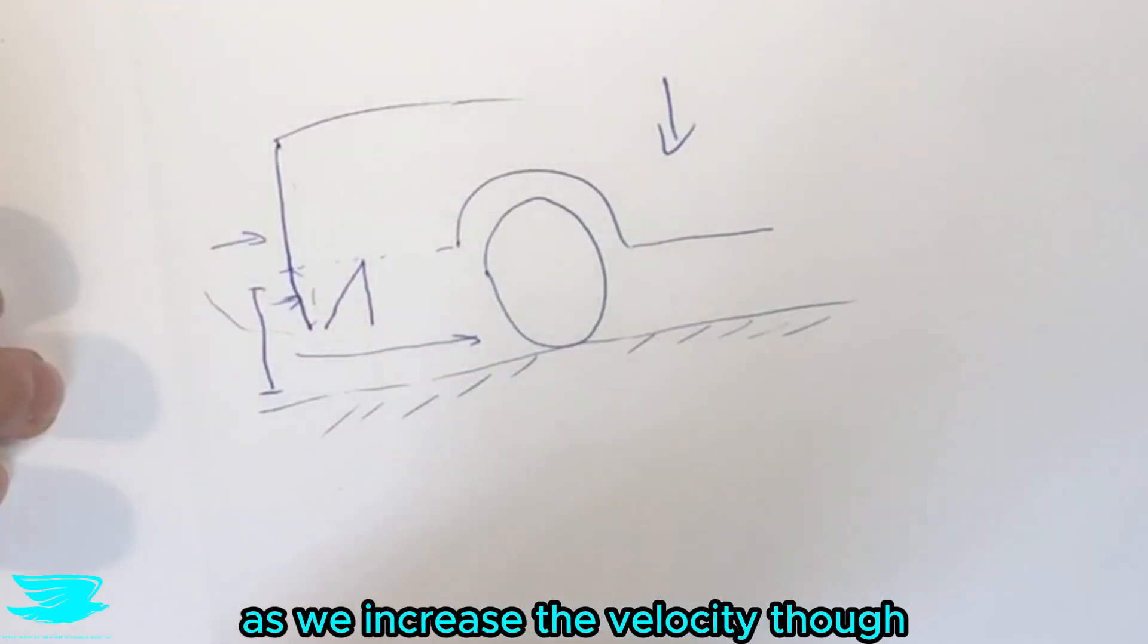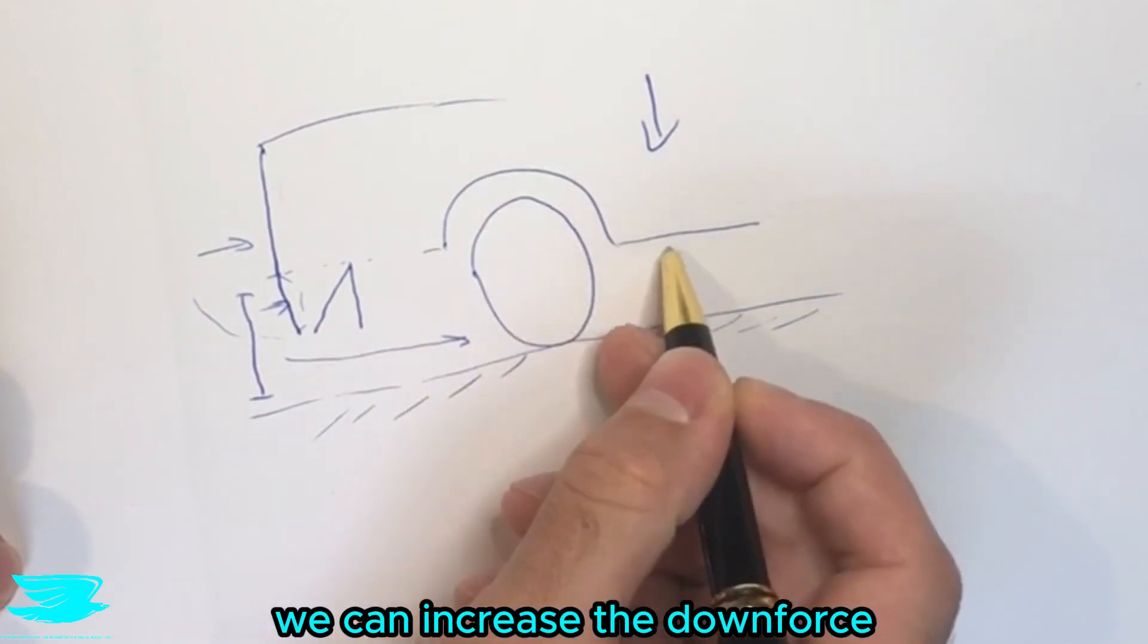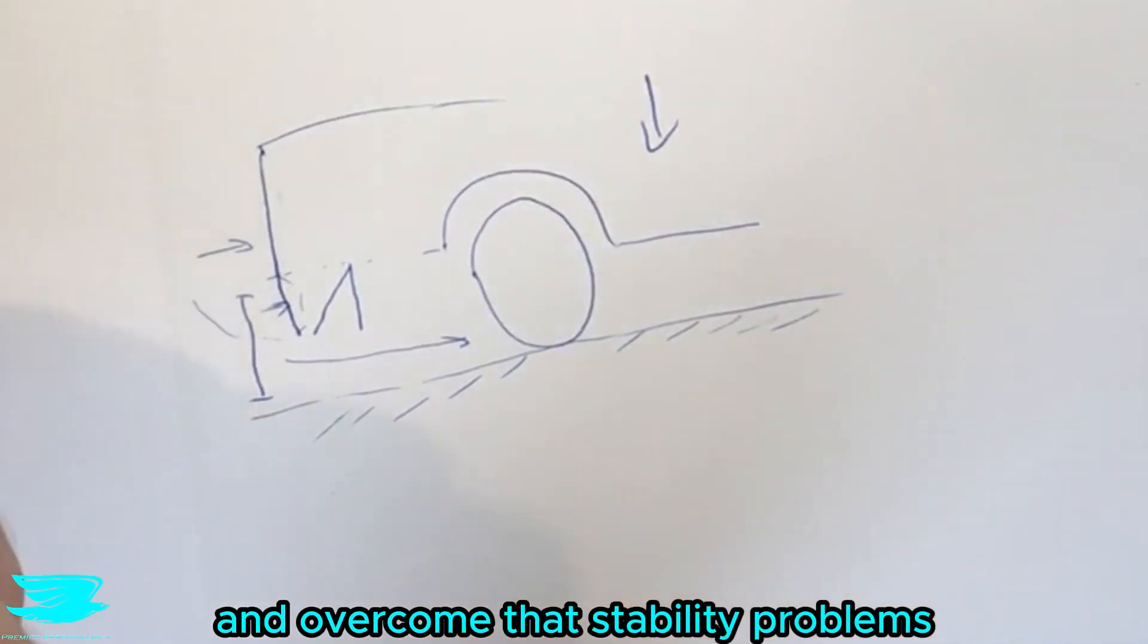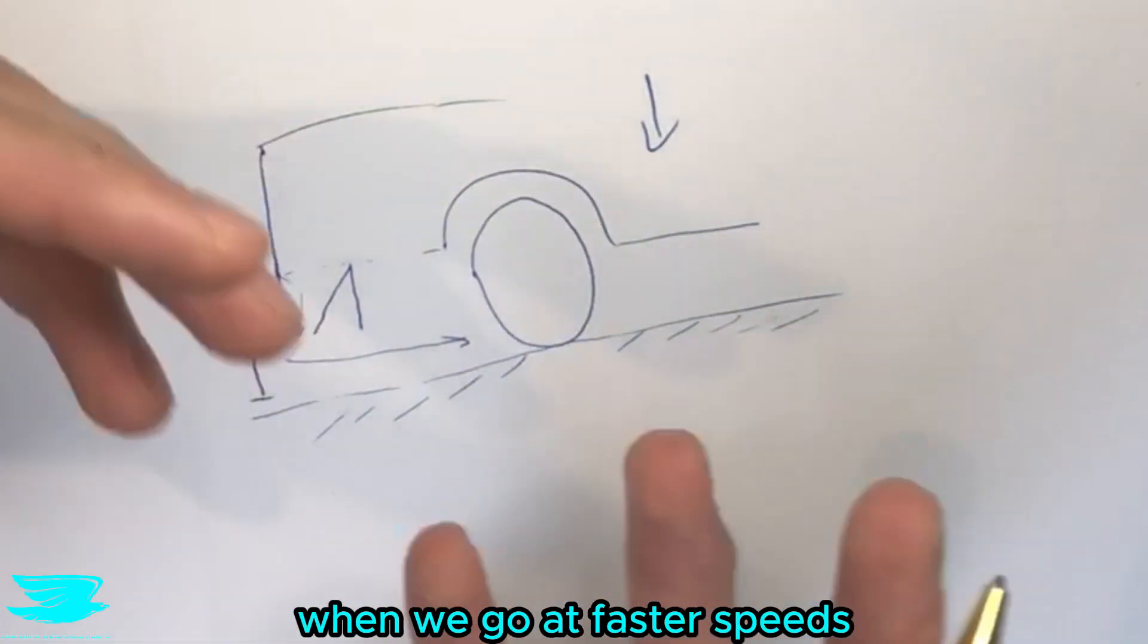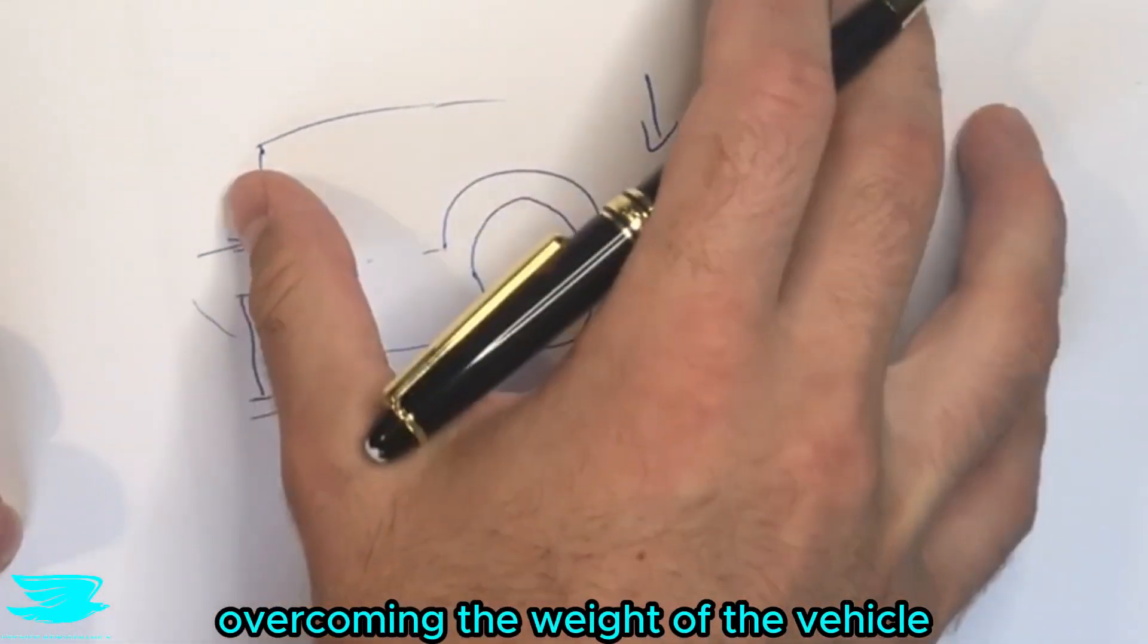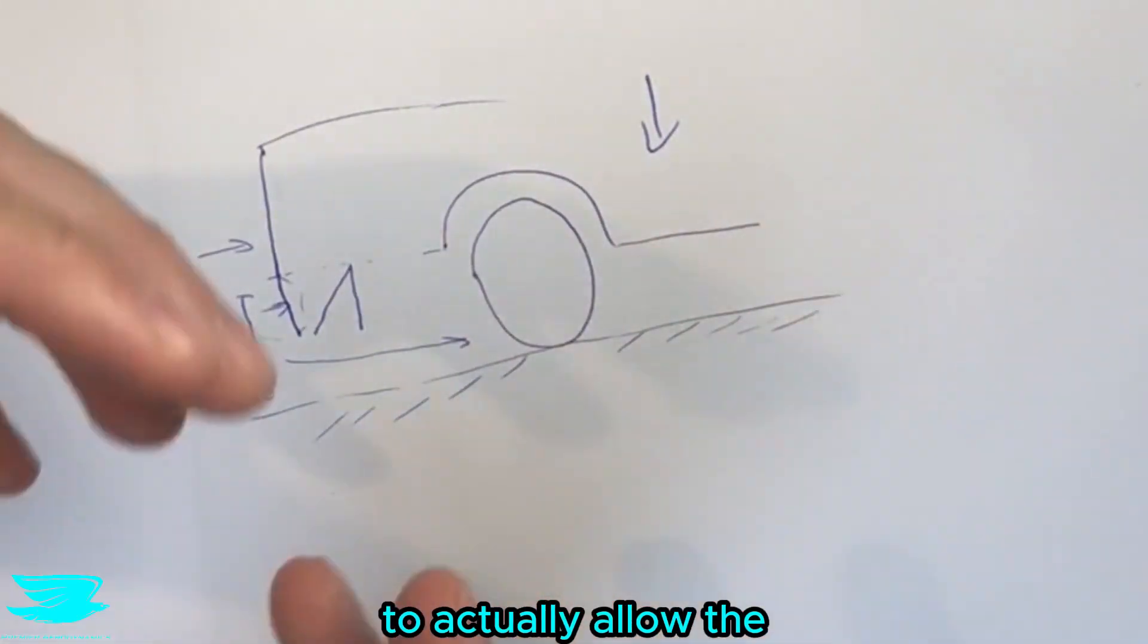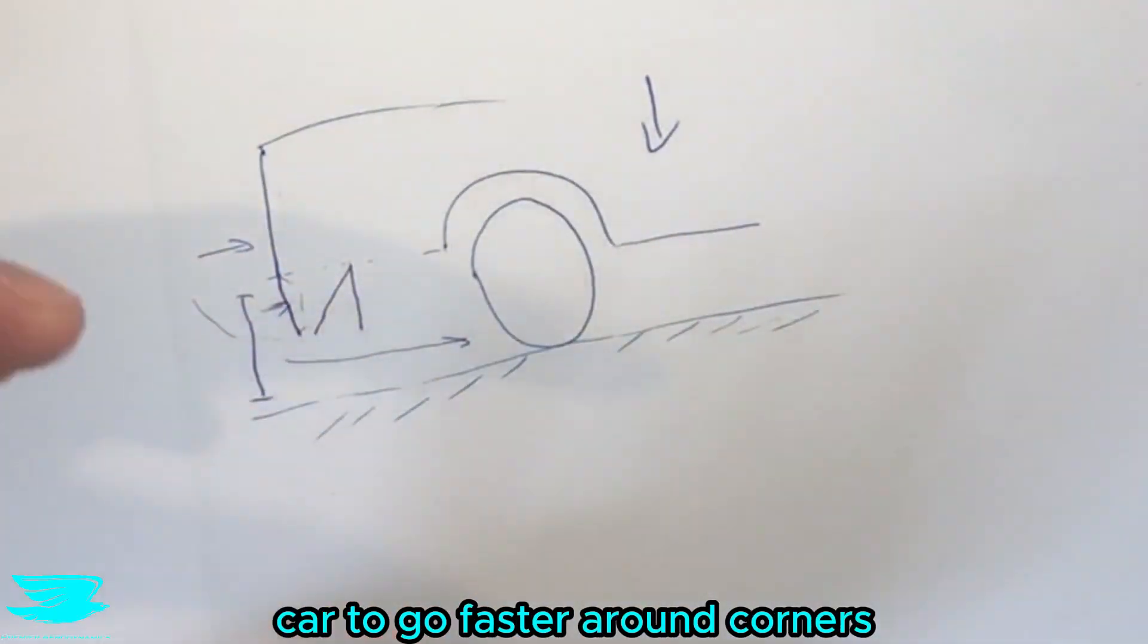As we increase the velocity though then that's when we run into problems. So by having this air dam here we can increase the downforce and overcome that stability problem so when we go to faster speeds we don't have this lift coefficient overcoming the weight of the vehicle and ideally we actually have more force pushing the car down to actually allow the car to go faster around corners potentially.